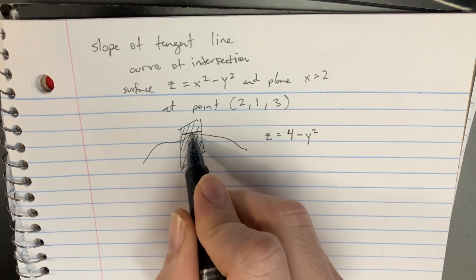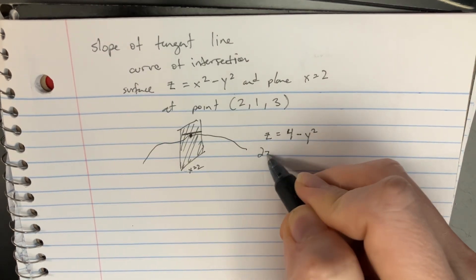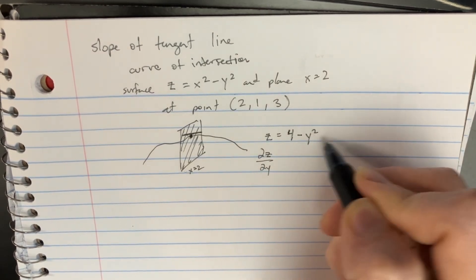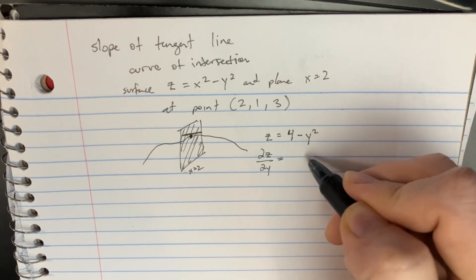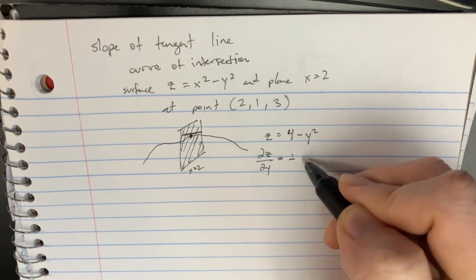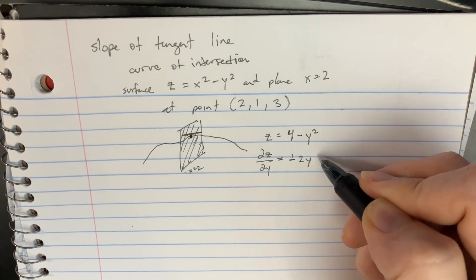But if we want to take the tangent line, we're going to take the derivative. So dz over dy, we only have the variable dy. So we'll go ahead and do negative 2y is going to be that.